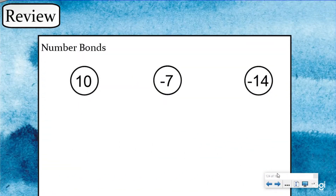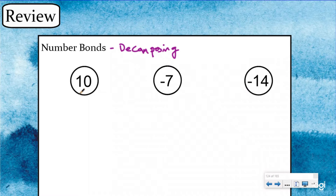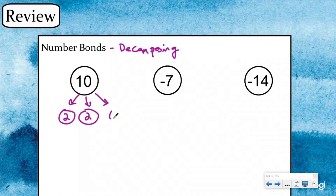Before we do that, we need to review an important skill you're going to be using today, and that is number bonds. For number bonds, what we're doing is decomposing these numbers into different parts that make them up. So you could decompose 10 into a two, and then another two, and then a six. You could decompose it into 10 ones, or into two fives. There's lots of different ways to do it.